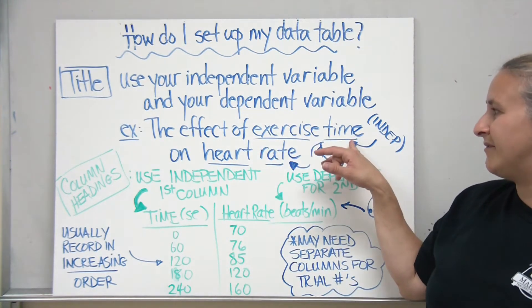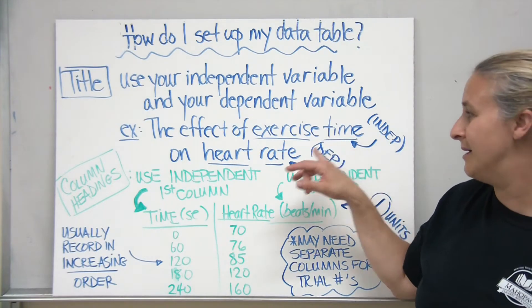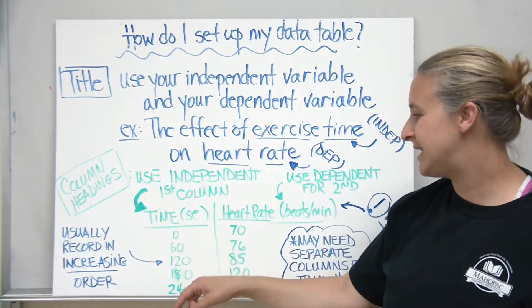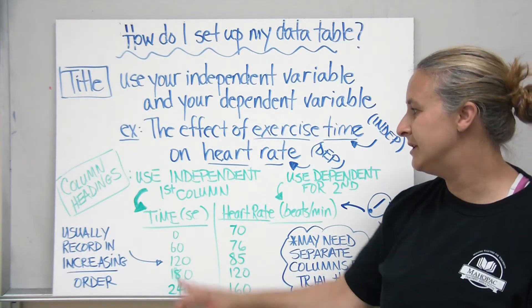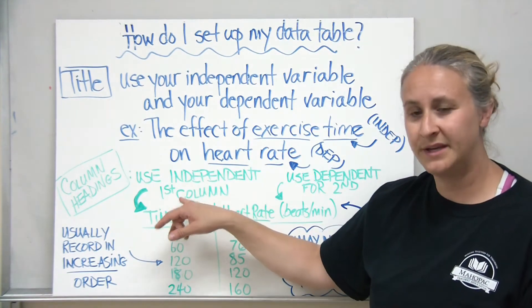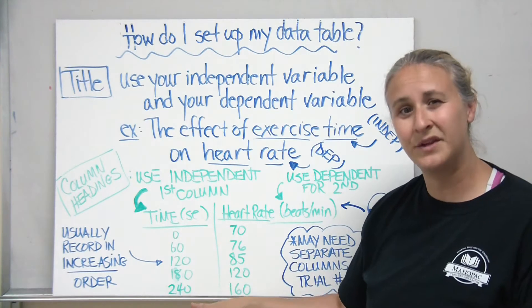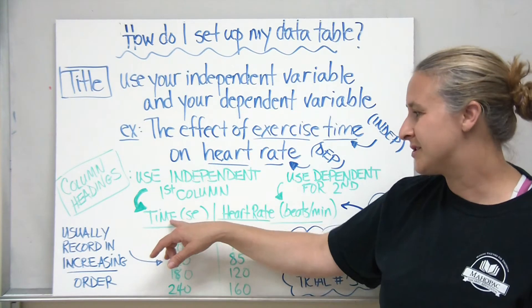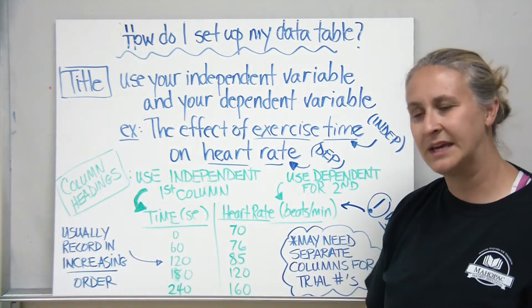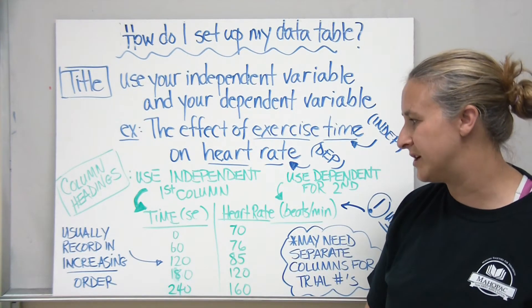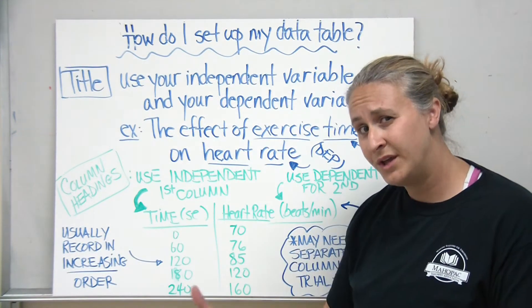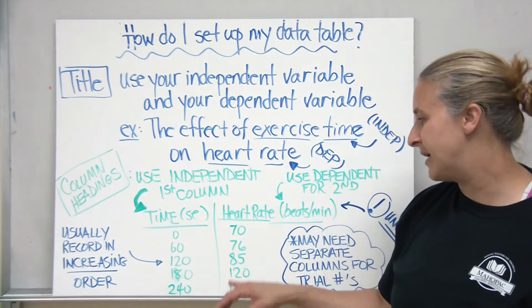I'm going to use my independent variable, exercise time, and my dependent variable, heart rate. We also need to have some column headings for our table. I usually like to use the independent as the first column because I can fill this out ahead of time before the experiment starts. This is the one that I set. So time in seconds. In this case I went from zero to 240 seconds. We usually like to record these in increasing order. Then again it also depends on your experiment.